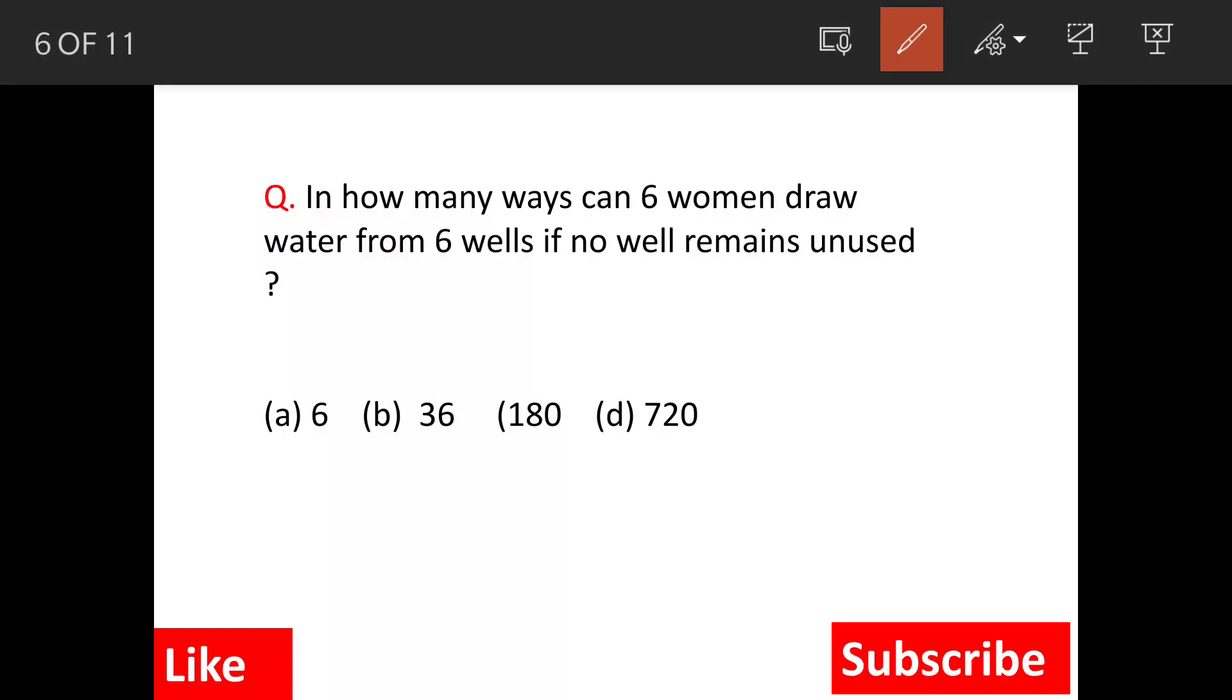In how many ways can six women draw water from six wells if no well remains unused? Let's understand the question. There are six women and there are six wells, and they are drawing water. When they are drawing water, the water is being drawn in a manner that every time there is a woman on a well.